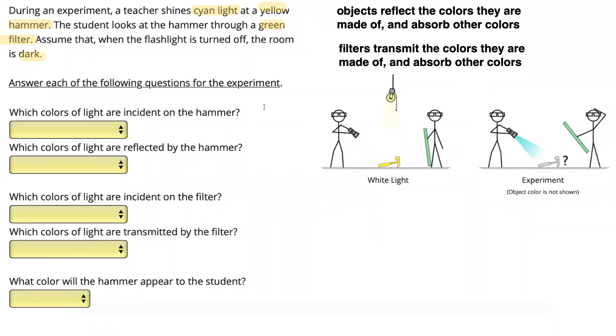So our first question is, what colors of light are incident on the hammer? Cyan is a secondary color made up of blue and green. Therefore, we can draw on here, onto our diagram, two rays of light. We have green and we have blue. Since cyan is made of green and blue, we can represent it with those two separate rays. So our question over here says, which colors of light are incident on the hammer? Green and blue.